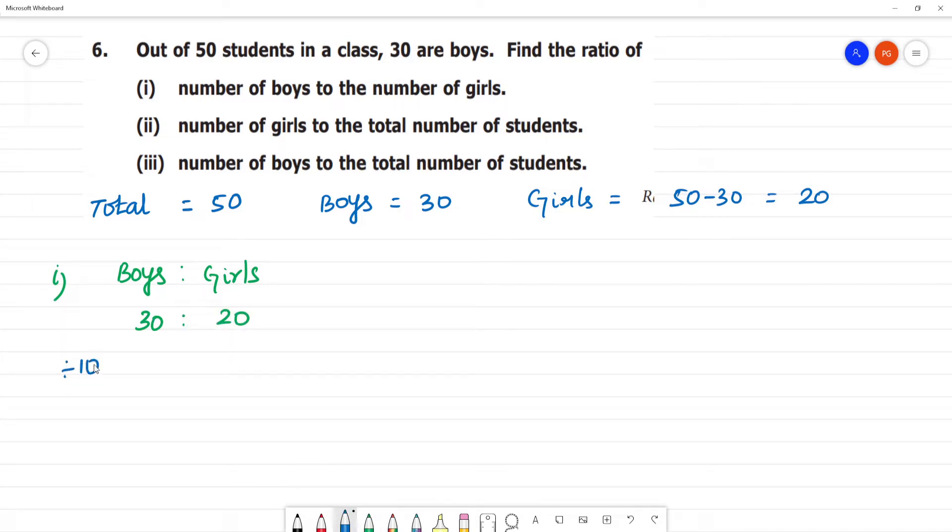Now divide by 10. What are we going to say? 3 is to 2. So the ratio is 3:2.